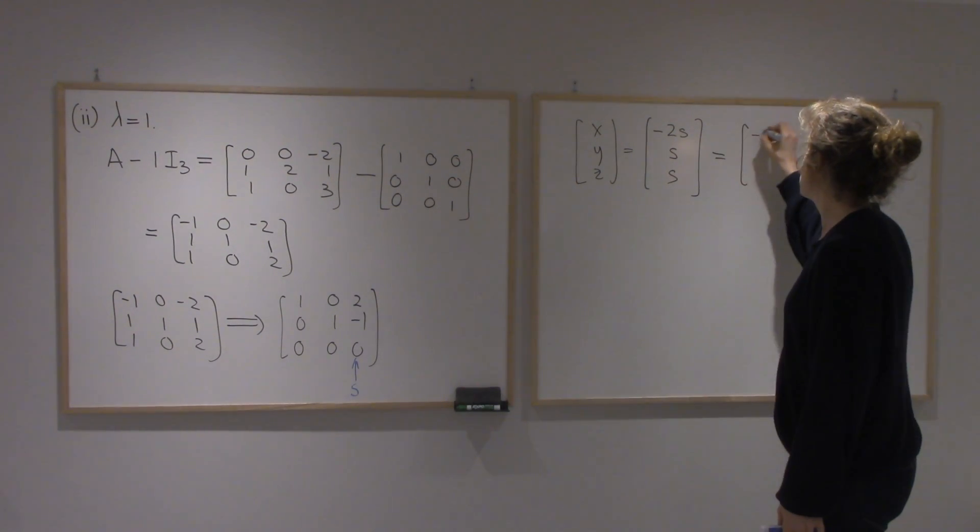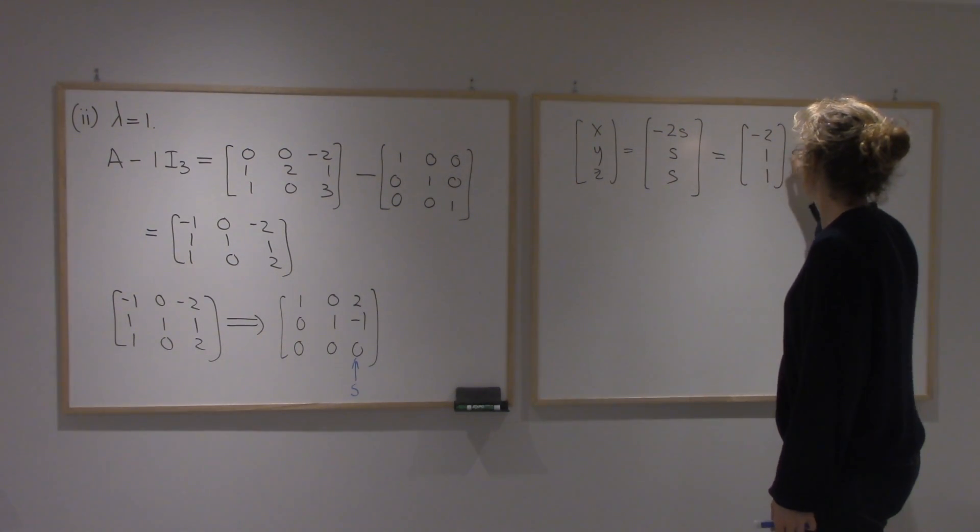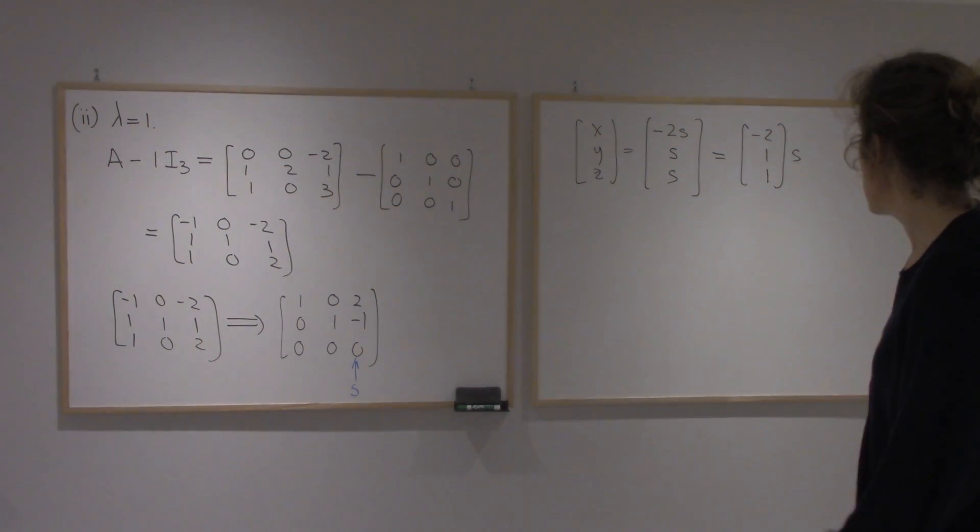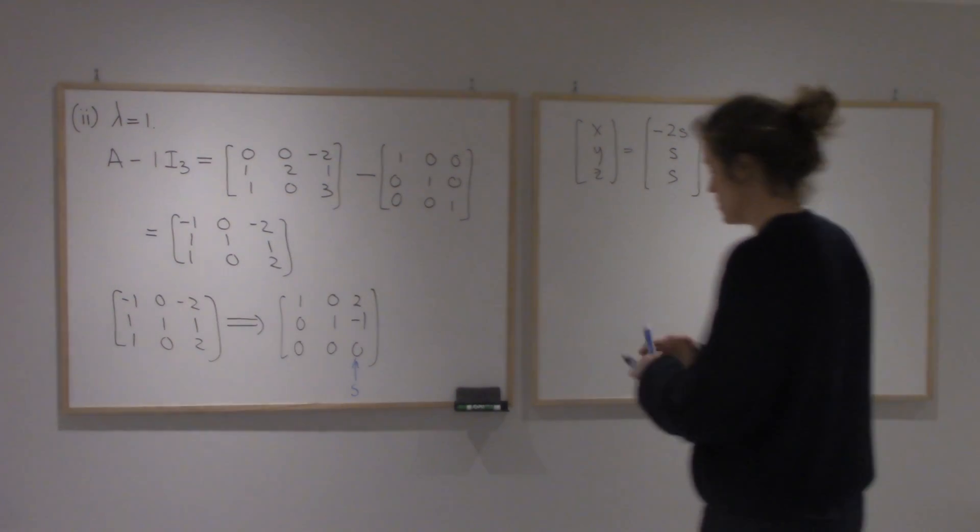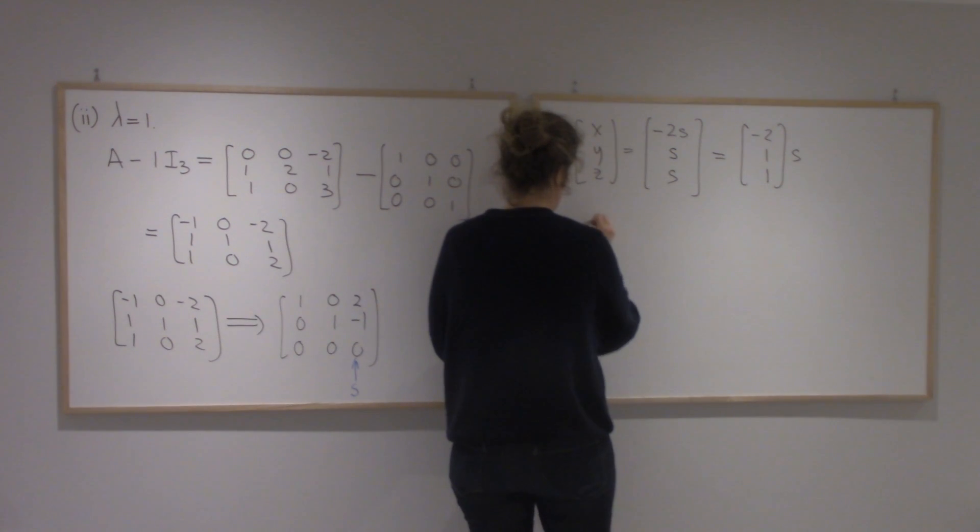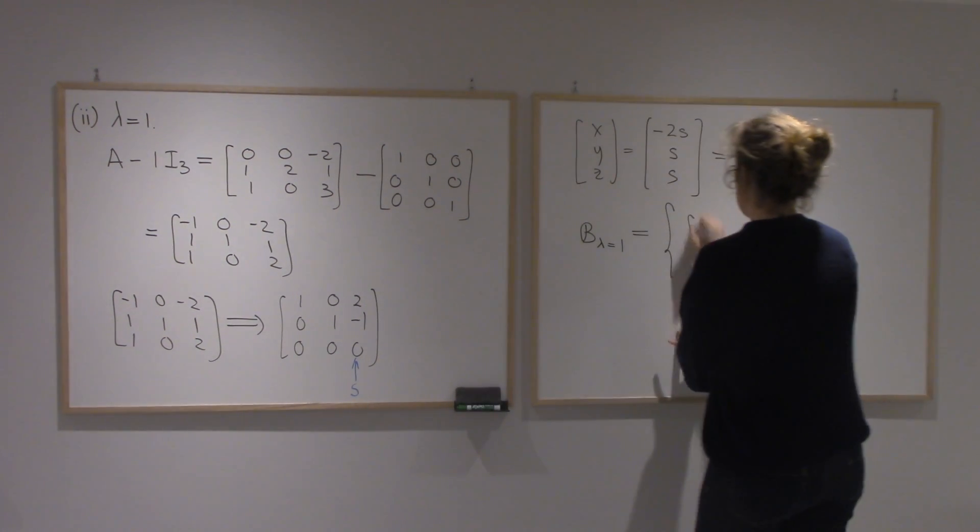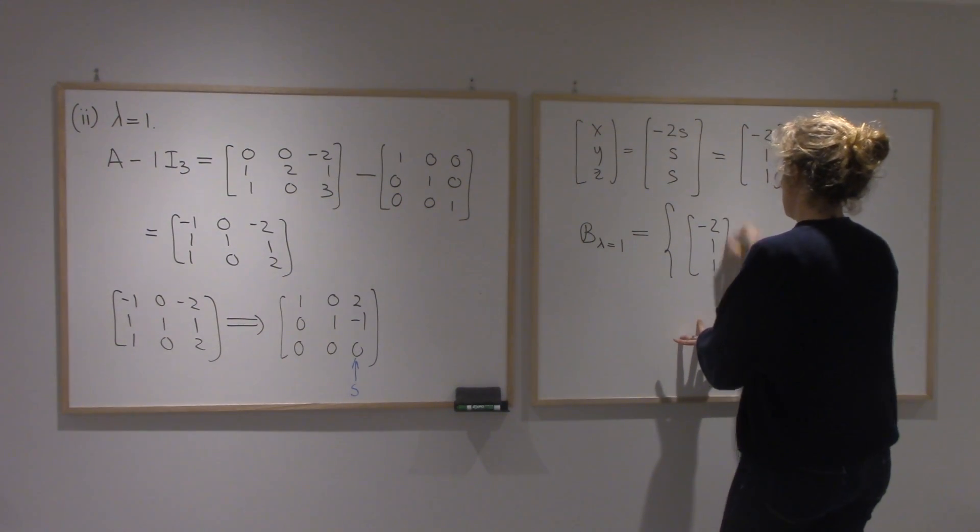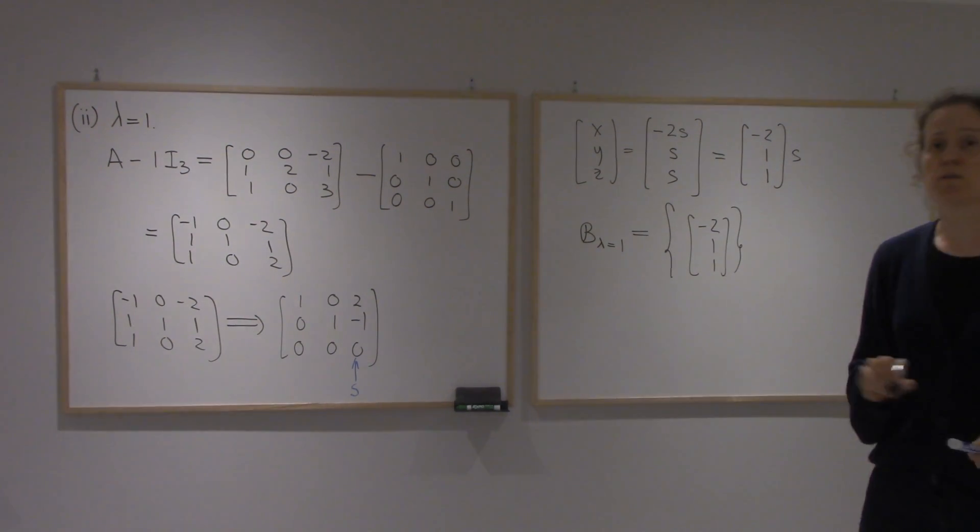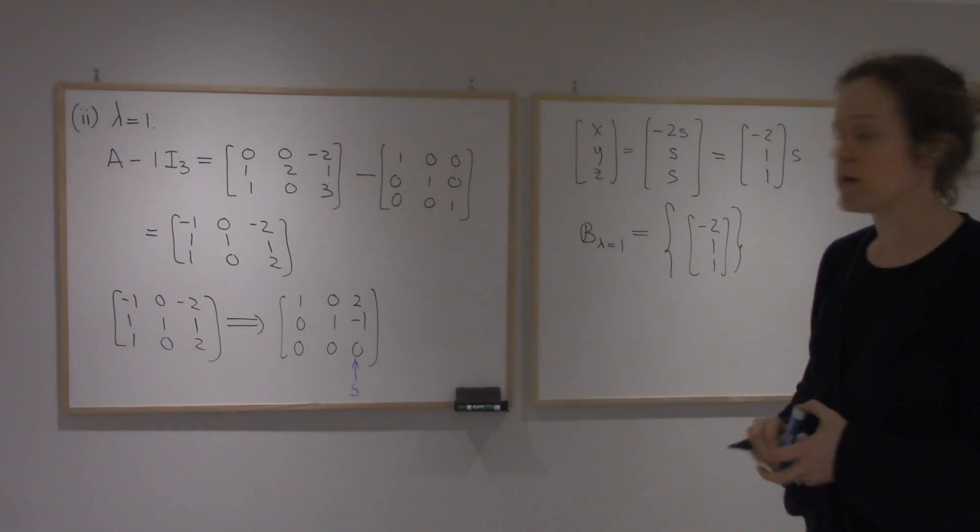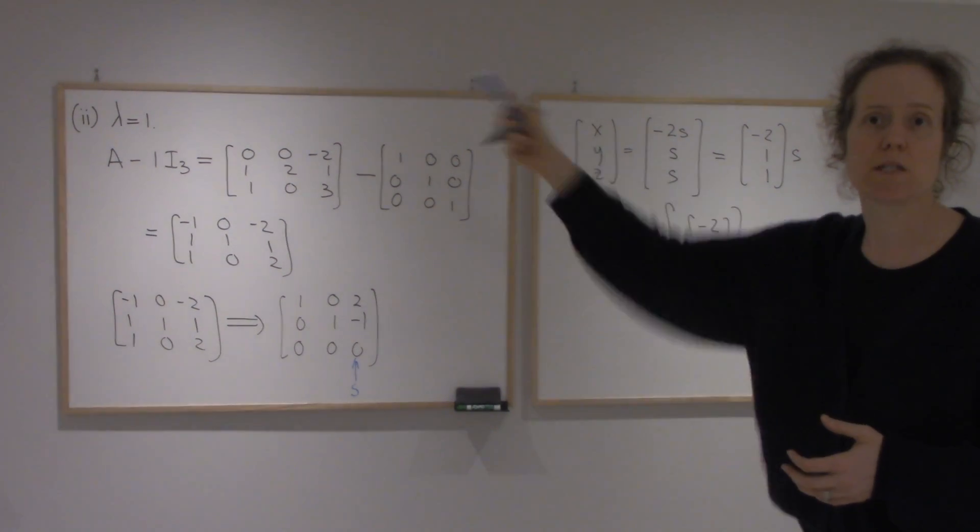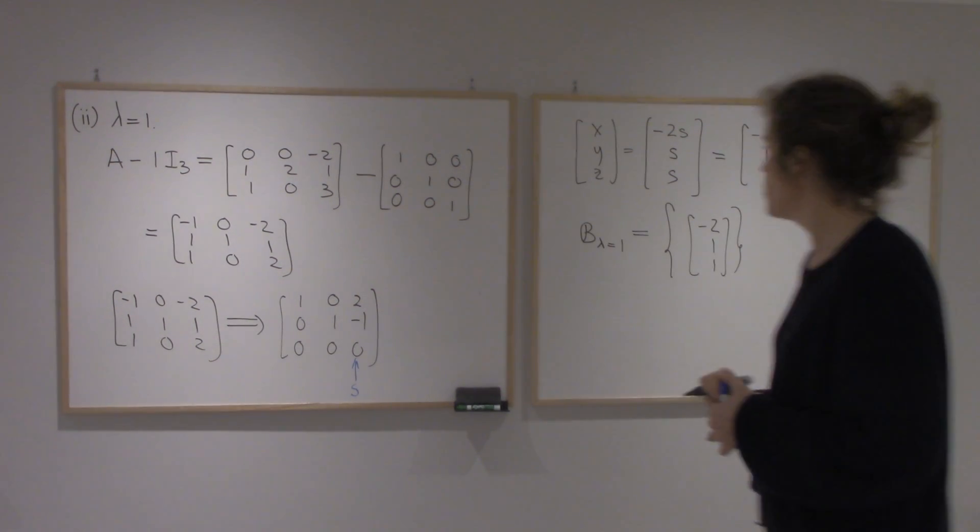That means I get minus 2, 1, 1 times s. That's going to be my basis vector. So basis for lambda equals 1 will be minus 2, 1, 1. That's the basis for the eigenspace of A corresponding to lambda equals 1.